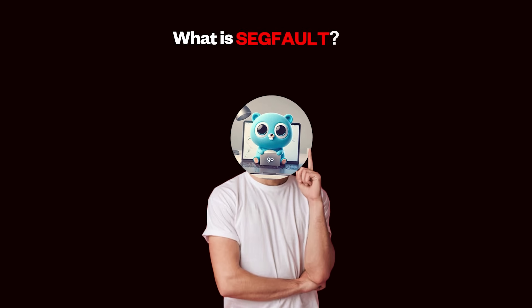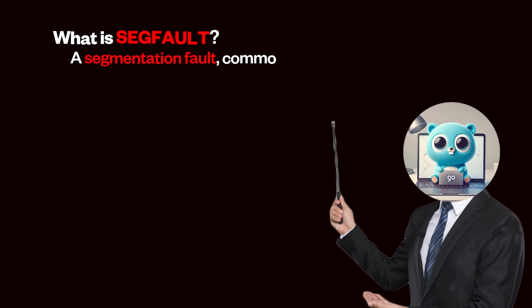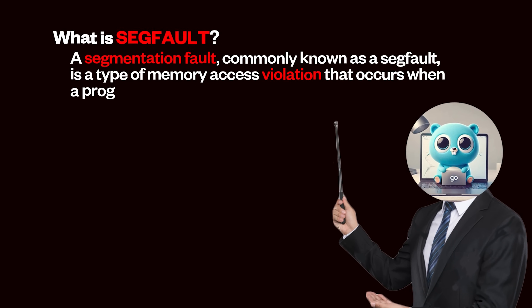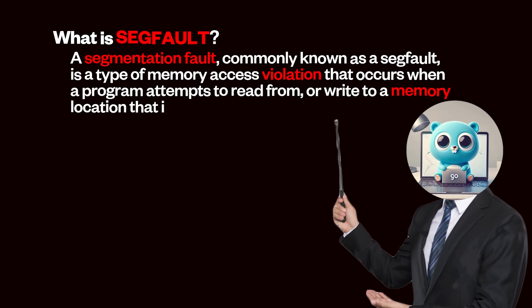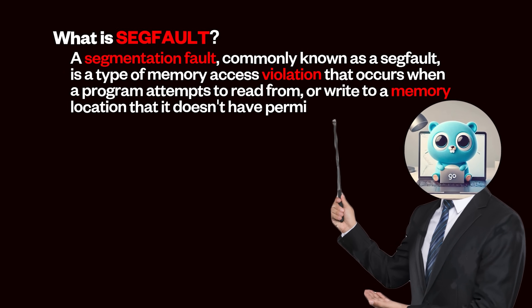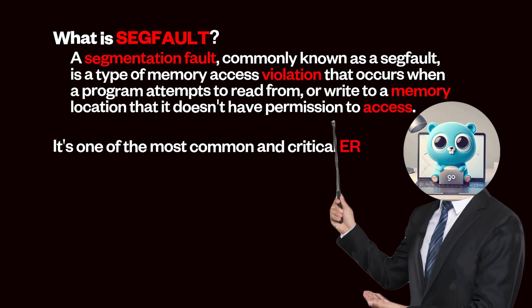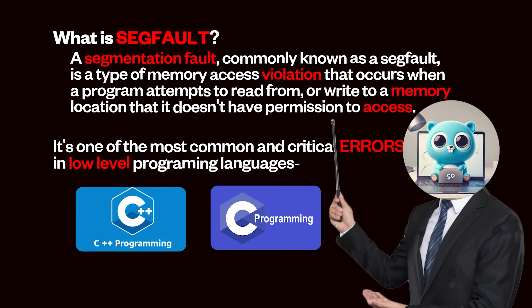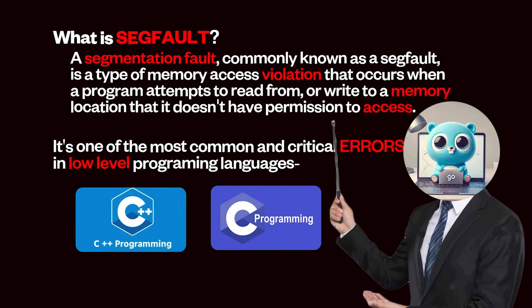As always, we have to start with a core definition. A segmentation fault, commonly known as a seg fault, is a type of memory access violation that occurs when a program attempts to read from or write to a memory location that it doesn't have permission to access. It's one of the most common and critical errors in low-level programming languages like C and C++, where memory management is explicit and manual.